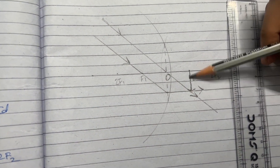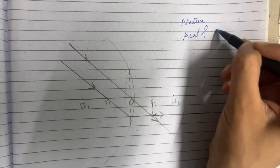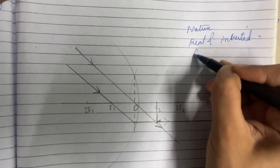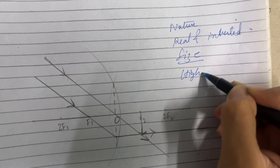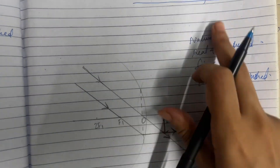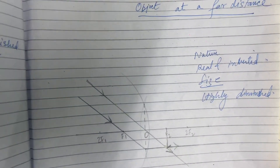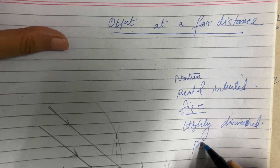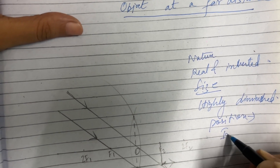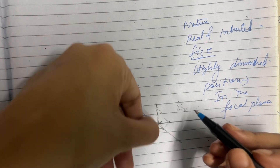Joining the meeting point, we can see it is exactly meeting in the focal plane. So the characteristics are: nature — real and inverted; size — highly diminished. In the first case when the object was at infinity, the size would be highly diminished to a point. The position will be in the focal plane.